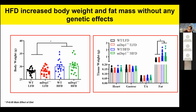Looking at basic phenotypes: high-fat diet significantly increased body weight regardless of genotype — wild-type or DRP1 knockout mice showed no difference — suggesting DRP1 knockout does not induce weight loss or slow weight gain. Similarly, fat tissue mass increased with high-fat diet but showed no genotype effect. Food consumption was also unchanged.